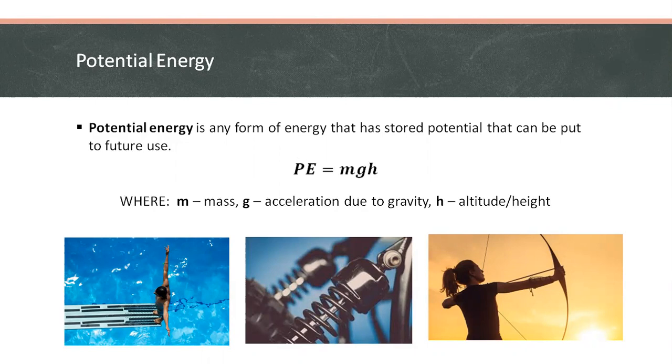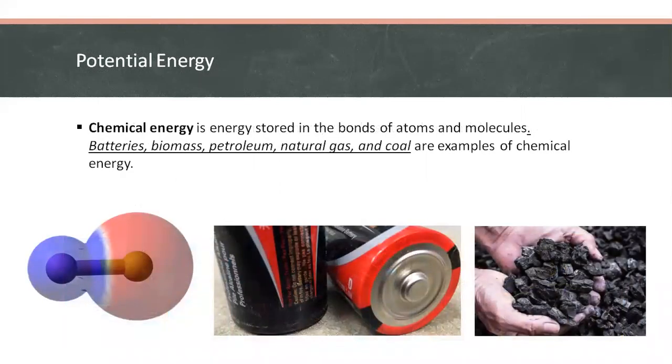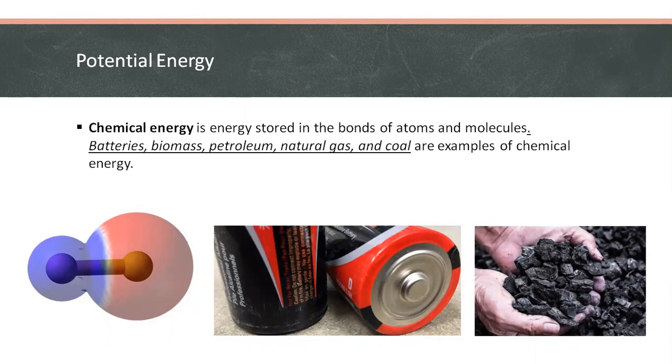Other forms of energy under this category is chemical energy, which is the energy stored in the bonding of atoms and molecules. Examples are batteries, biomass, petroleum, natural gas, and coal.